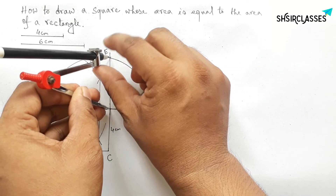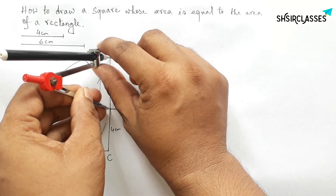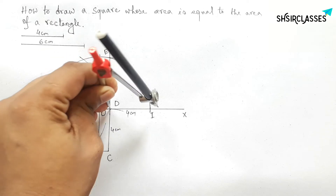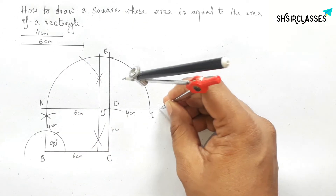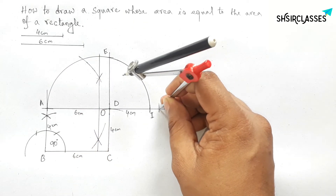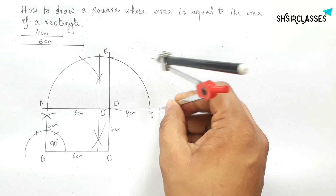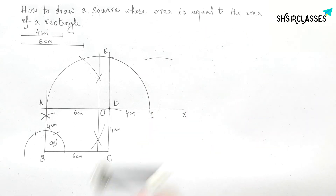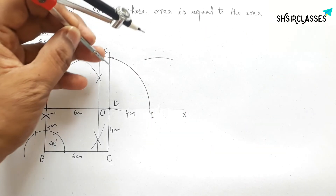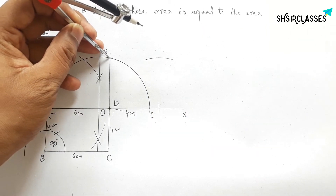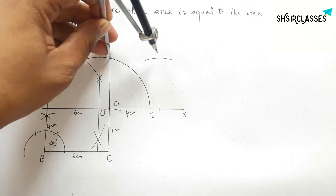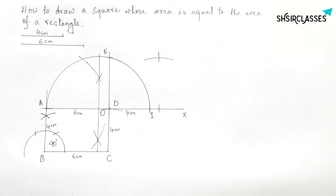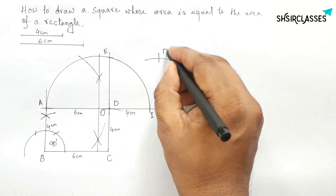Next, taking the length DE. This is perfect — cutting here. Now putting the compass here and taking the same length, drawing an arc. Then putting the compass on point E and cutting here and here.